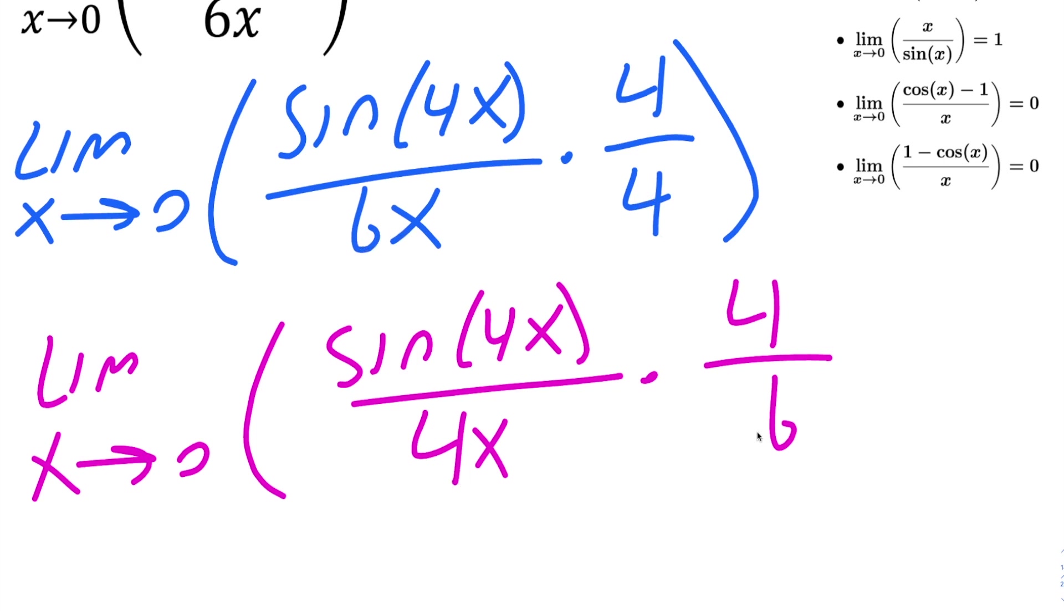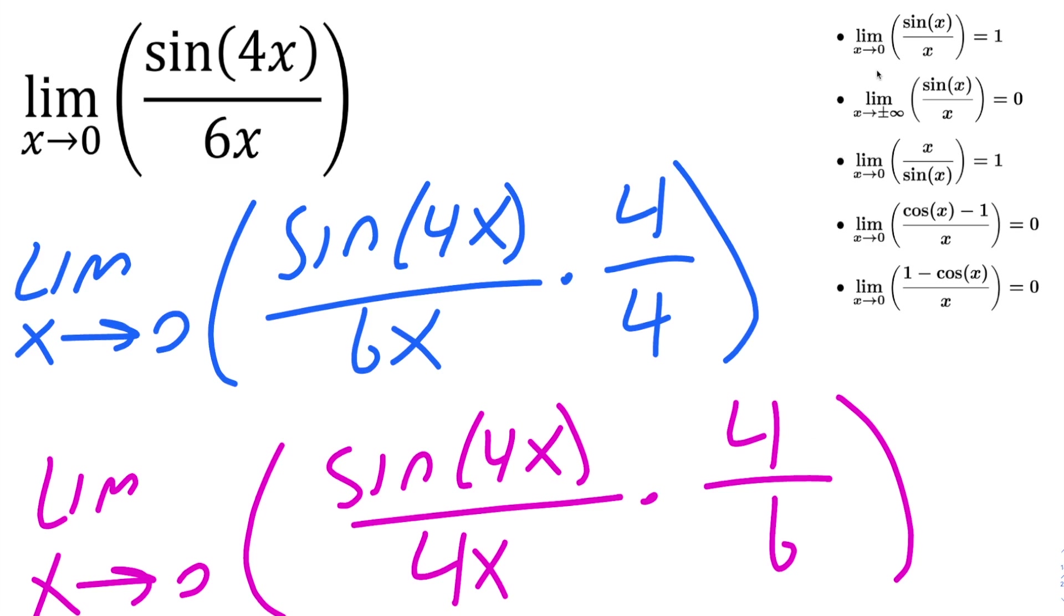This is saying 4x times 6, which is 24x. So we're not doing any changes. All we're doing is rearranging. And again, the reason we're doing this is to apply this property.